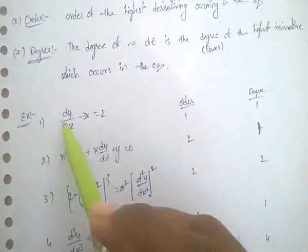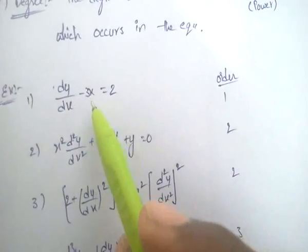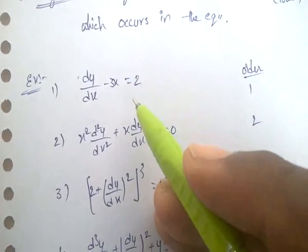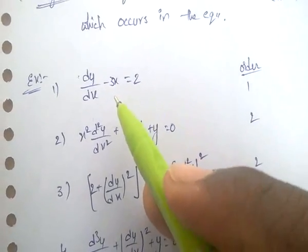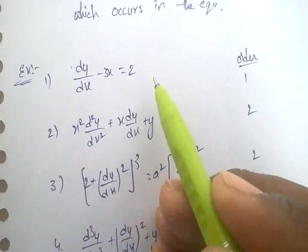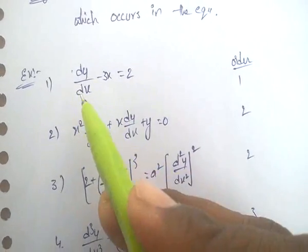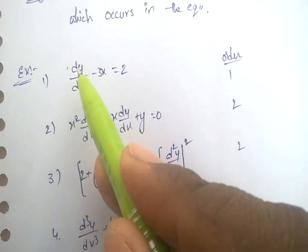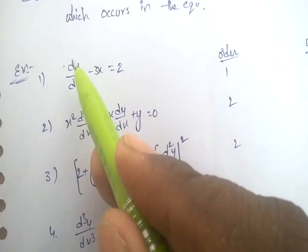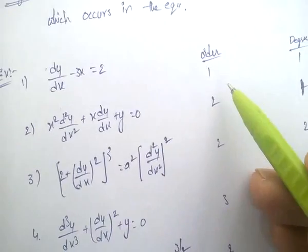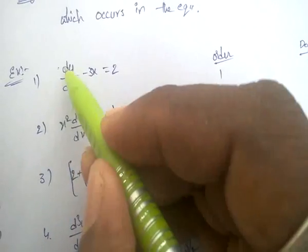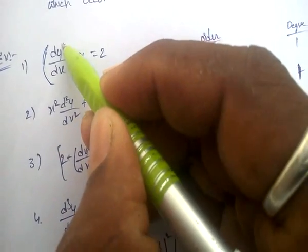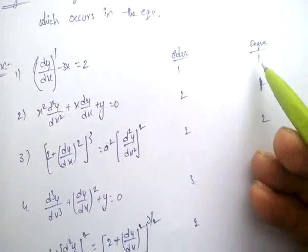For example, dy/dx − 3x = 2. What is the order? Order is the highest derivative. Here the only derivative is dy/dx — the power of d is 1. So the order is 1. And degree is the power of the highest derivative: dy/dx has power 1. So order is 1, degree is 1.